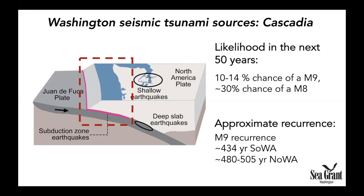What is recurrence? Recurrence is just dividing the amount of time by the number of earthquakes. It gives you an average idea about how often these things reoccur, but it doesn't tell you exactly how long it is between each earthquake.